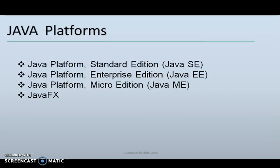Java Platforms: The platform has defined and supports four editions of Java targeting different application environments, and segmented many of its APIs so that each belongs to one of the platforms. The platforms are: Java Platform Standard Edition, that is Java SE — a computing platform for development and deployment of portable code for desktop and server environments.